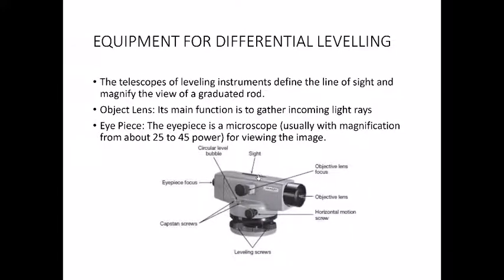Then we have the circular bubble, which tells you if your instrument is completely leveled. By completely leveled, I mean that the horizontal plane is tangent to the level surface. When the circular bubble is in the center, your instrument is leveled, and only then can you take readings — not before that.